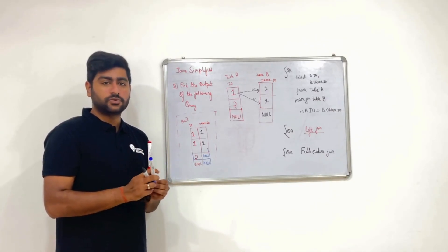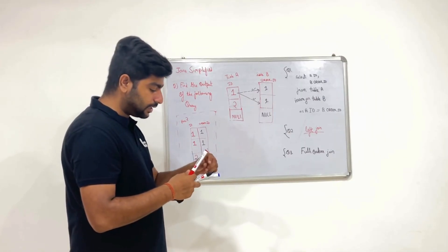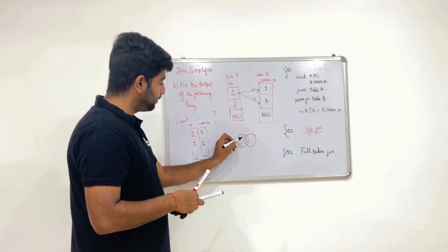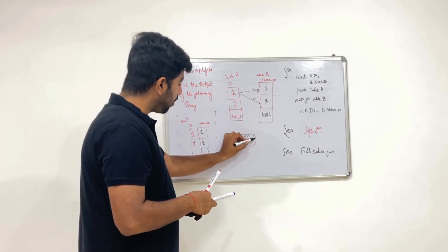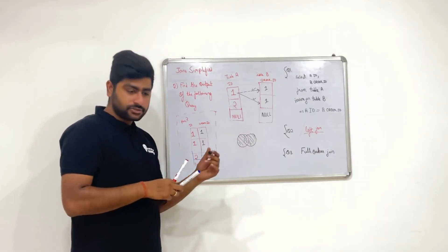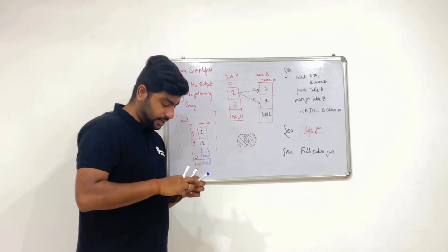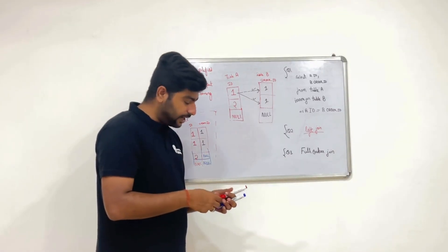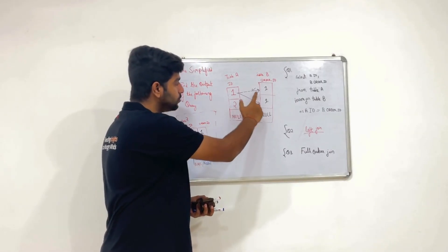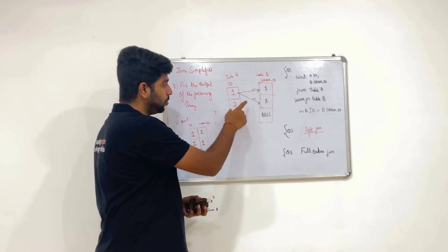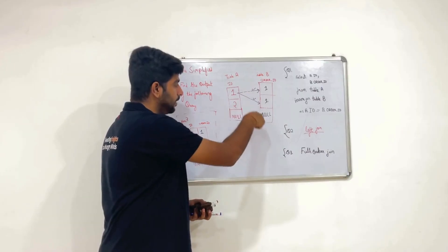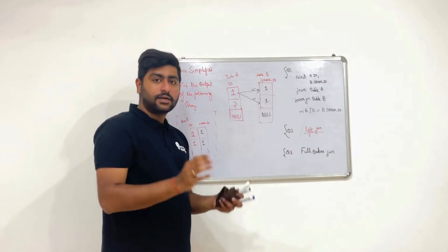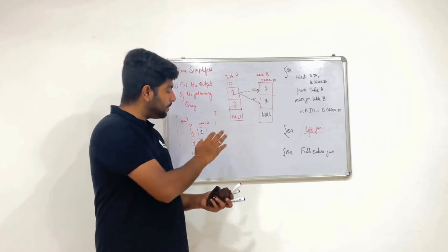The third question is full outer join. Full outer join means all elements from both tables must be present in the result. Element 1 joins with its matching rows, element 2 does not join with anything, the null from table A does not join with anything. Now for table B — all elements that have not joined must also be present. The null in table B has not joined with anything.